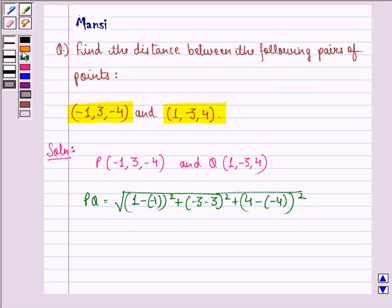Let us simplify this. We get square root of (1 minus (-1) is 1 plus 1, that is 2, and square of 2 is 4), plus ((-3) minus 3 is (-9), and square...